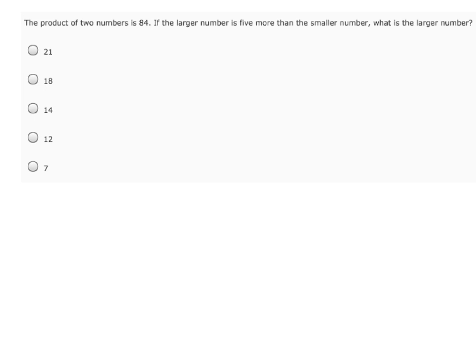The product of two numbers is 84. If the larger number is five more than the smaller number, what is the larger number?